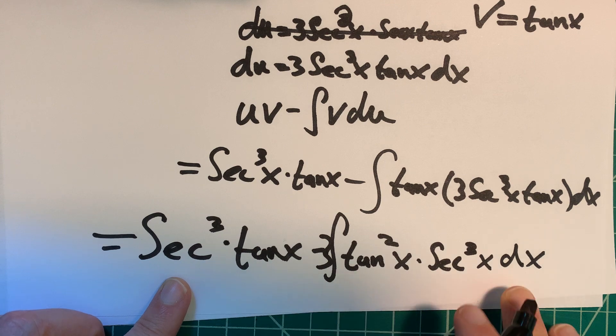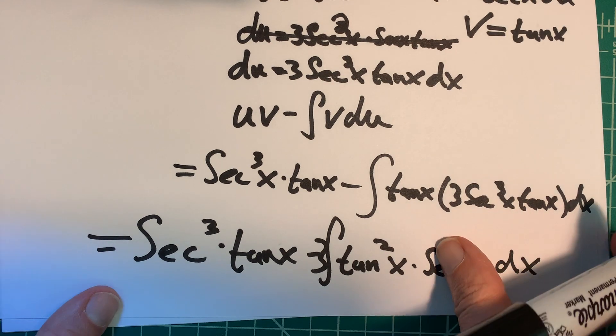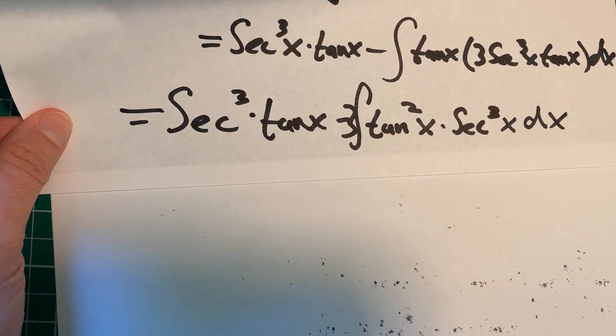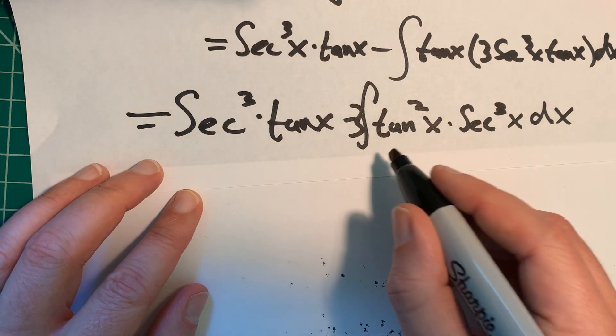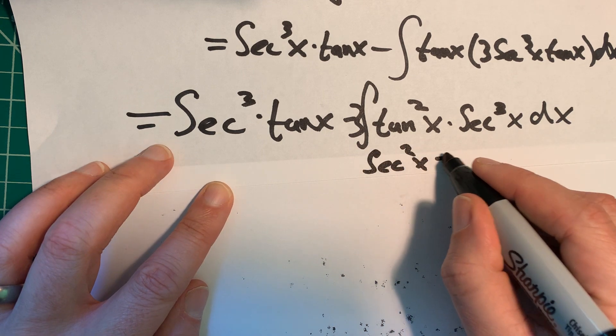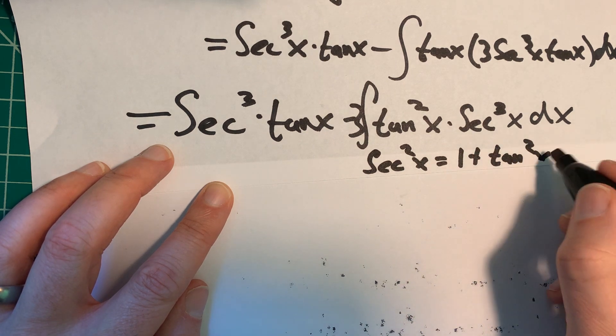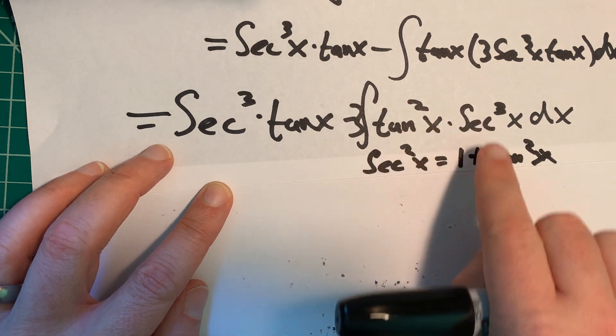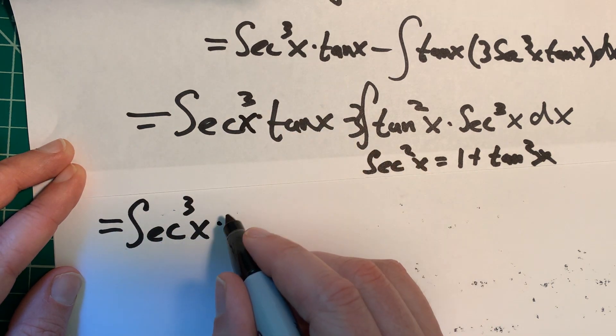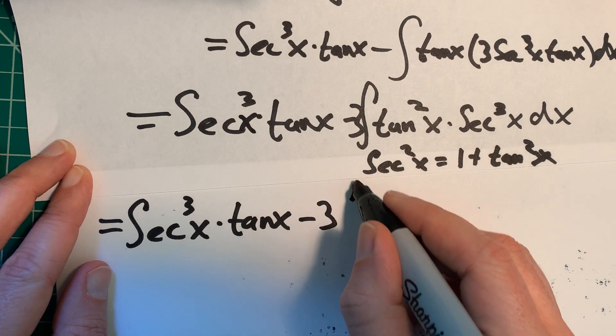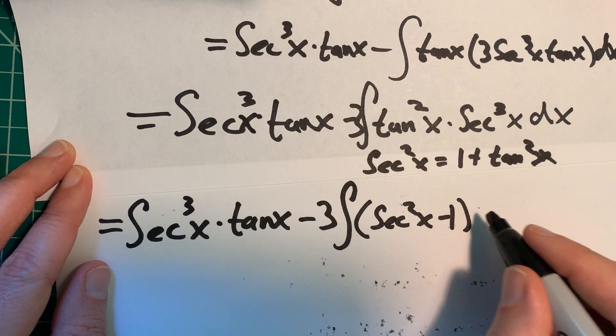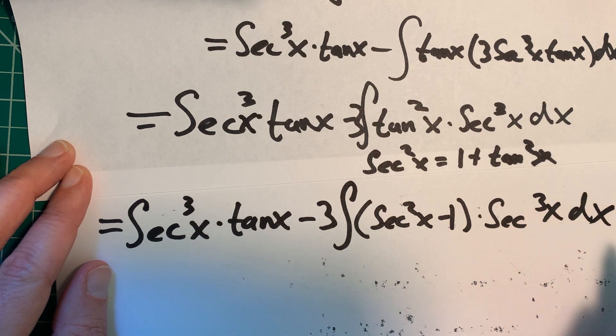Now, what to do. So we have tangent squared times secant cubed x. It just keeps getting worse and worse. We've got to think of something to do. I think one thing we could do is we could rewrite tangent squared. Why would we do that? Well, from trig identities, we know that secant squared x equals 1 plus tangent squared x. And if I do that, then in my integral here, I would only have secants. And at least that's something I can work with.